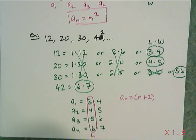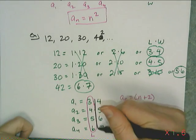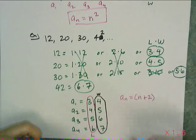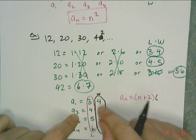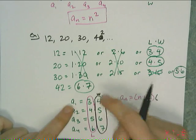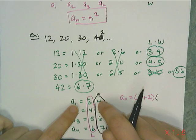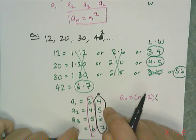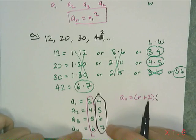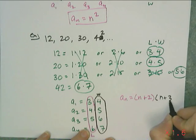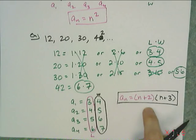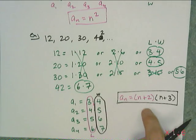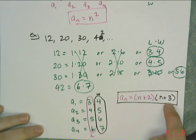Now for the widths — 4, 5, 6, 7 — I'm trying to turn a 1 into a 4, a 2 into a 5, a 3 into a 6. Each time I'm adding 3, so the width is n plus 3. And I can double check: yes, this is indeed the apparent formula for this sequence — (n+2)(n+3). Now this is not the only apparent formula; I could multiply it all out to get another form, but that's a little harder to figure out.